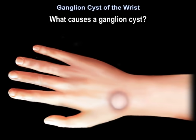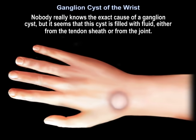What causes a ganglion cyst? Nobody really knows the exact cause, but it seems that this cyst is filled with fluid either from the tendon sheath or from the joint.